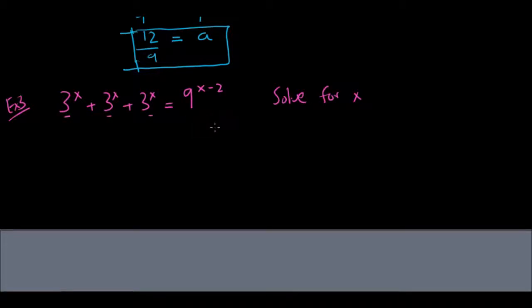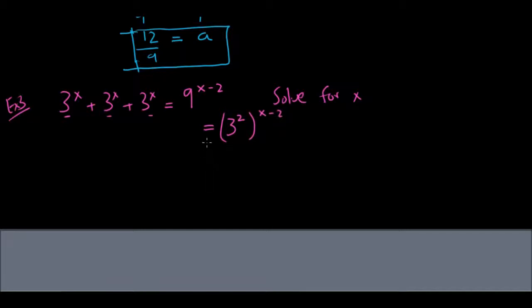Since 3 squared equals 9, I can write 9 as 3 squared, so the right side becomes 3 squared raised to x minus 2. When a power is raised to a power, I multiply the exponents, giving 3 to the 2x minus 4 on the right side.